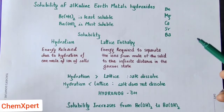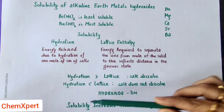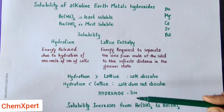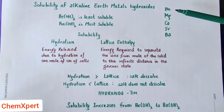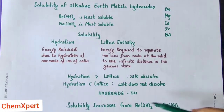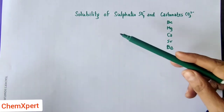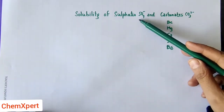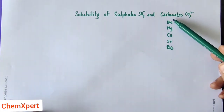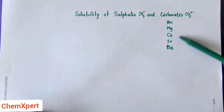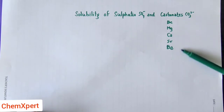So the final conclusion is that solubility increases from beryllium to barium in the case of hydroxides. But if we discuss the solubility of sulfates and carbonates down the group, then it decreases.